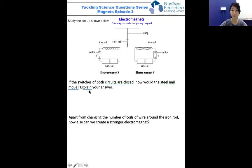To explain why the steel nail will move in a particular direction, the first step is to look at the materials used in this setup. We see that iron rod and steel nail are used, which is good because these are magnetic materials. This tells us that the iron rod can be magnetized into a magnet, and if magnetized, it will attract the steel nail.